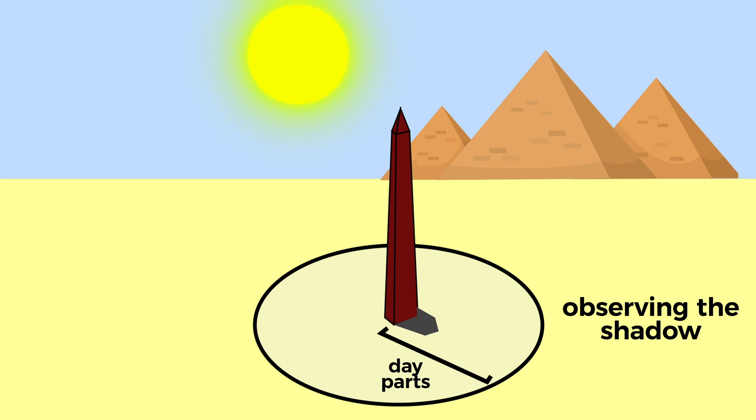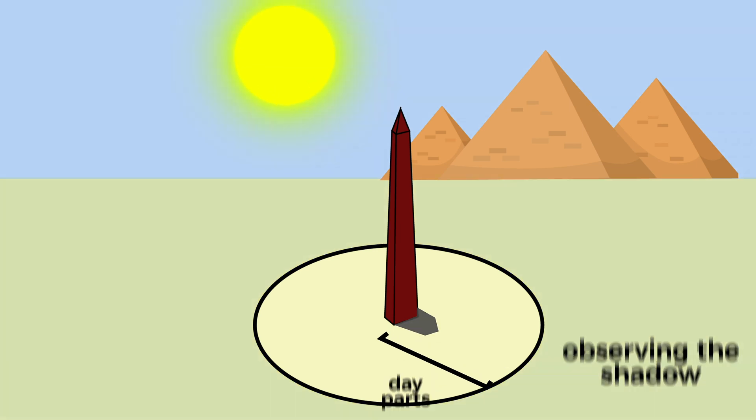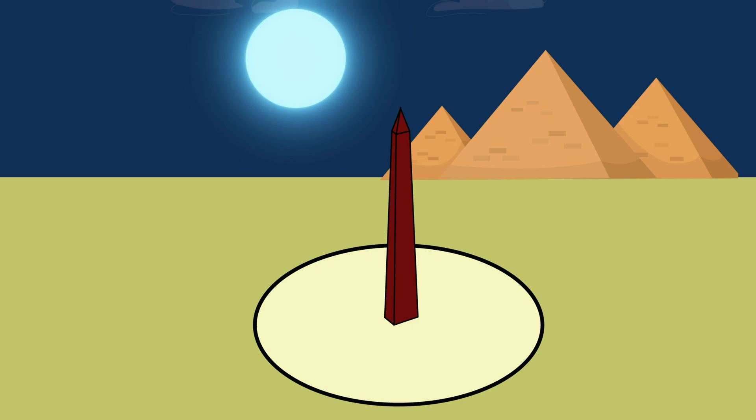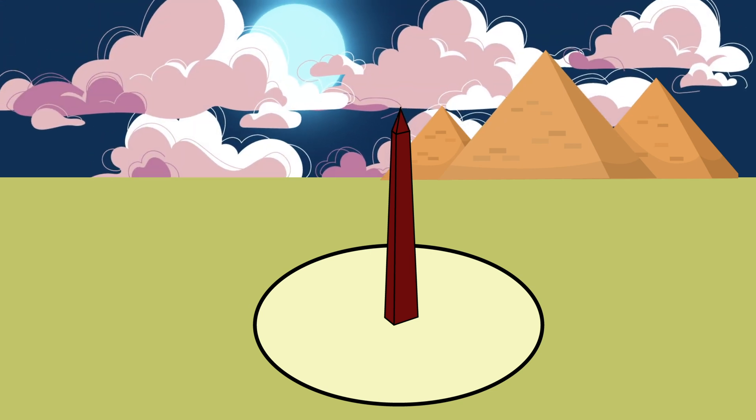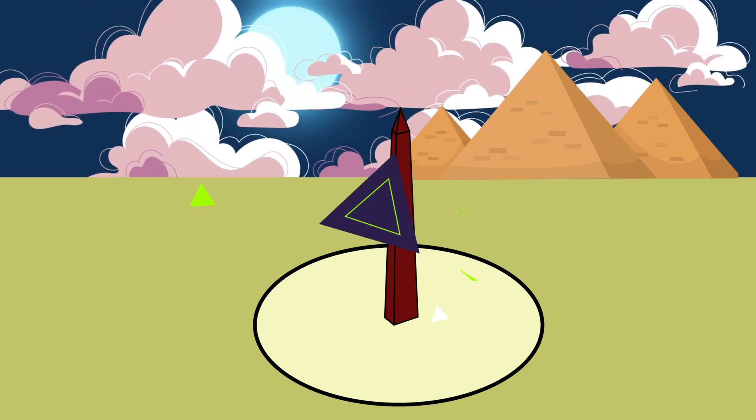This primitive solar clock relied entirely on sunlight, making it unusable at night or on cloudy days. Yet it marked a significant beginning in humanity's quest to measure time.